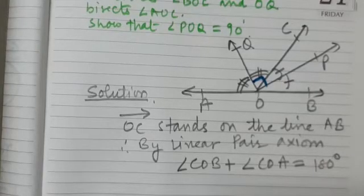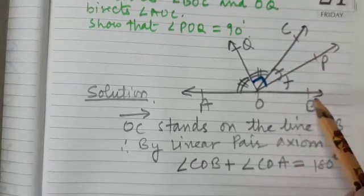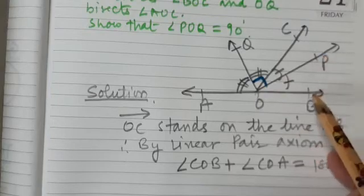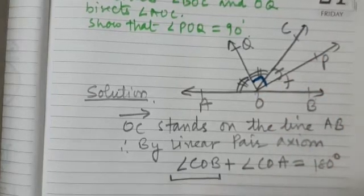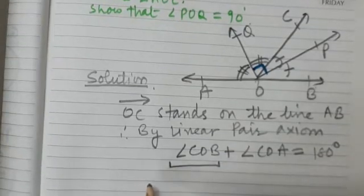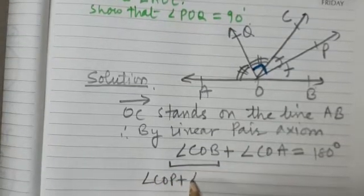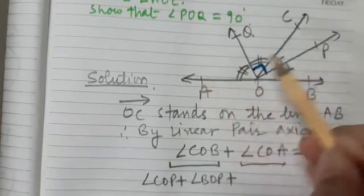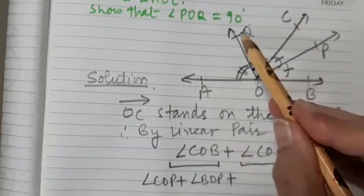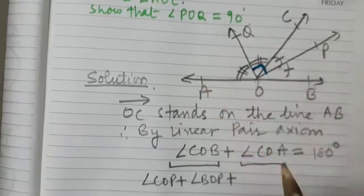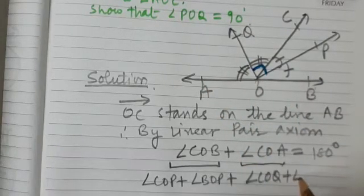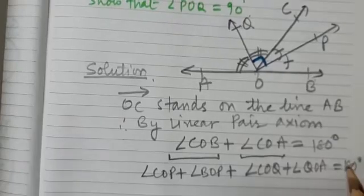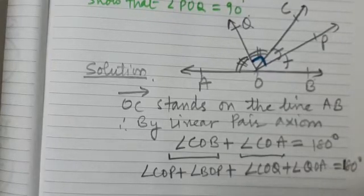Now, angle COB can be written as angle COP plus angle BOP. And in place of angle COA, we can write angle COQ plus angle QOA. So their sum: angle COP + angle BOP + angle COQ + angle QOA = 180 degrees.